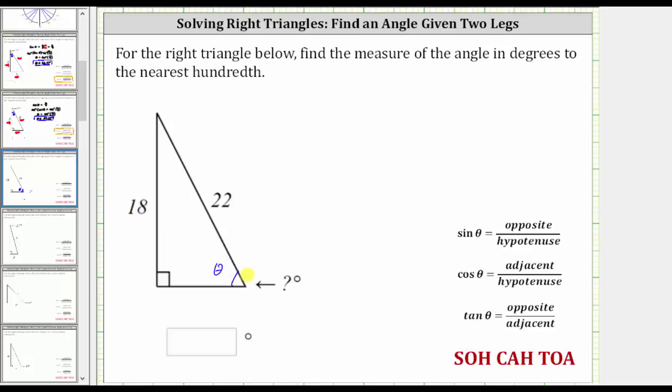And now let's find the opposite side, the adjacent side, and the hypotenuse in relation to angle theta. If this is the angle theta, then the opposite side is this side here, the length of 18 units.